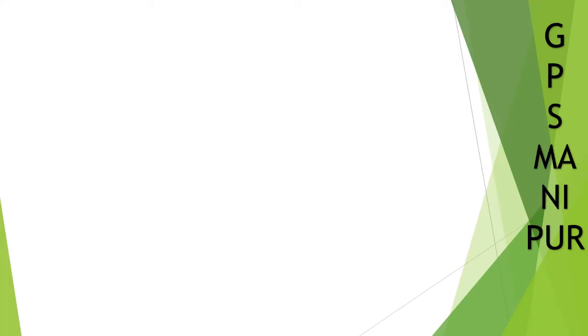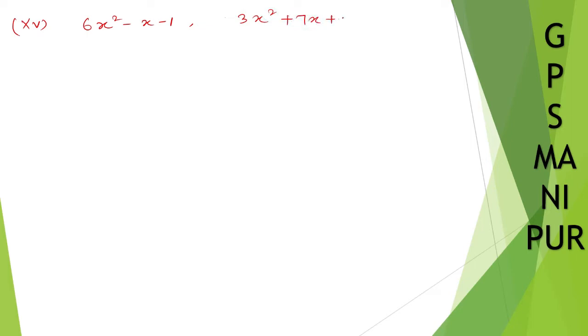We are doing Exercise 2.4, question number 2, grammar number 15. We have three polynomials: 6x squared minus x minus 1, 3x squared plus 7x plus 2, and 2x squared plus 3x minus 2.